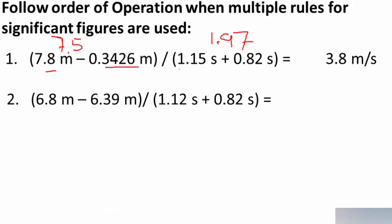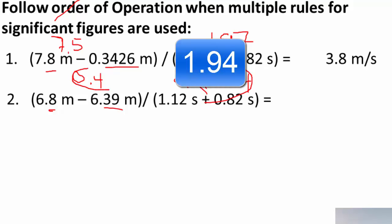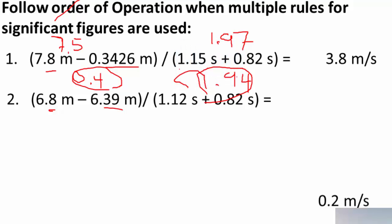In the second combined example: 6.8 minus 6.39. The first number has 1 place to the right of the decimal and the second has 2, so we keep 1 place, giving 0.4 — which is only 1 significant figure. Then 1.12 plus 0.82 gives 1.94, which has 3 significant figures. Dividing, we use the lesser count of 1 significant figure, so the final answer is 0.2 meters per second.